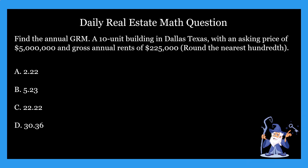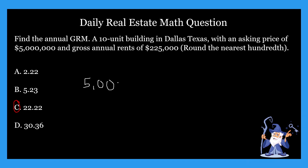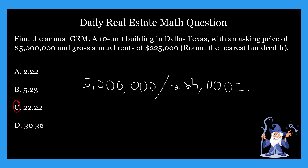The correct answer for this one is 22.22. As I mentioned in the video before, the formula you need to remember is: gross rent multiplier equals property price divided by gross rental income. So in our case, you're going to take that $5 million — which is our property price — and divide it by the gross rental income, which is $225,000. And that gives you 22.22.